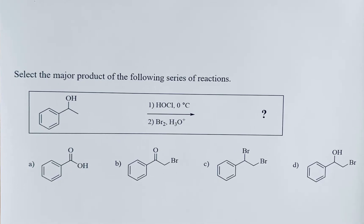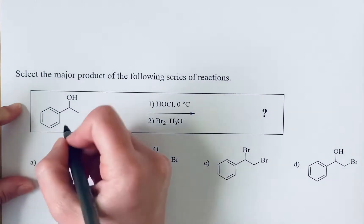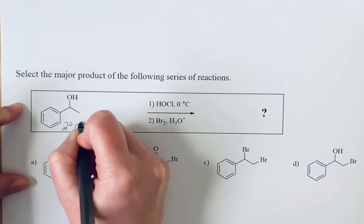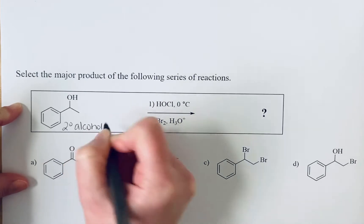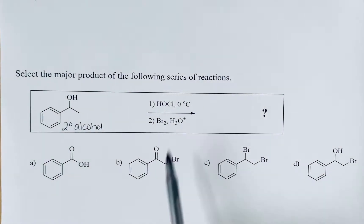Select the major product of the following series of reactions. We see that we are starting here with a secondary alcohol and we have two reactions here. The first one is this hypochlorous acid at zero degrees Celsius.